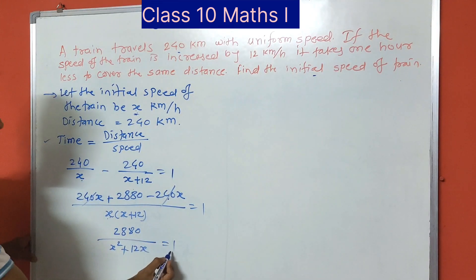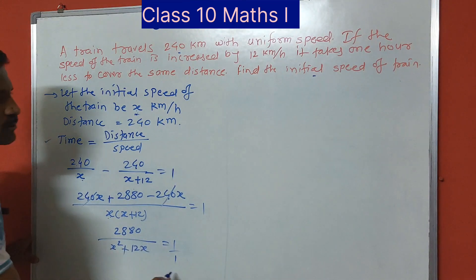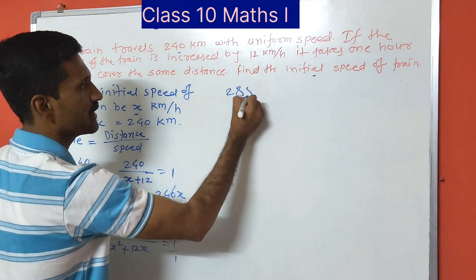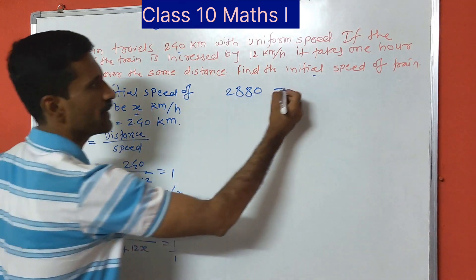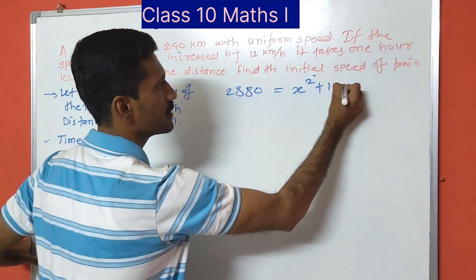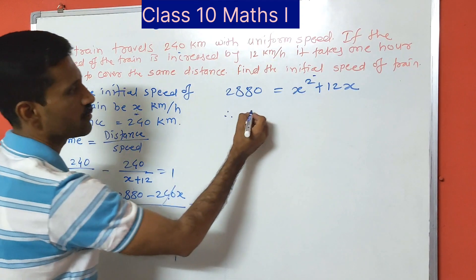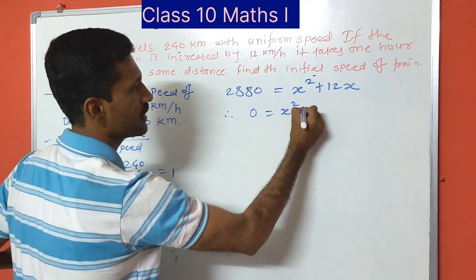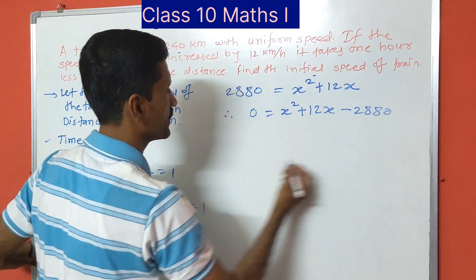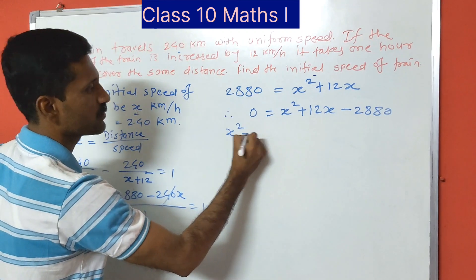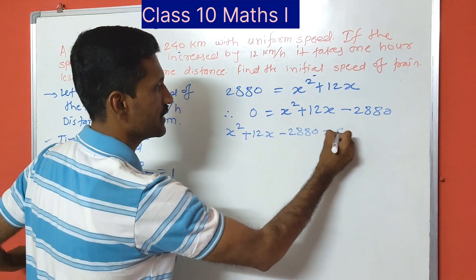Cross-multiplying, since the denominator on the right is 1, we get 2880 equals x squared plus 12x. Transferring 2880 to the right hand side gives us 0 equals x squared plus 12x minus 2880.